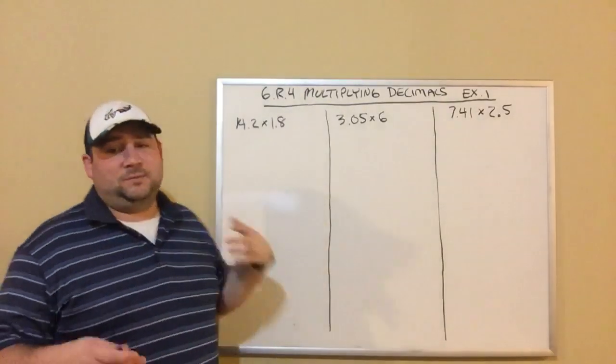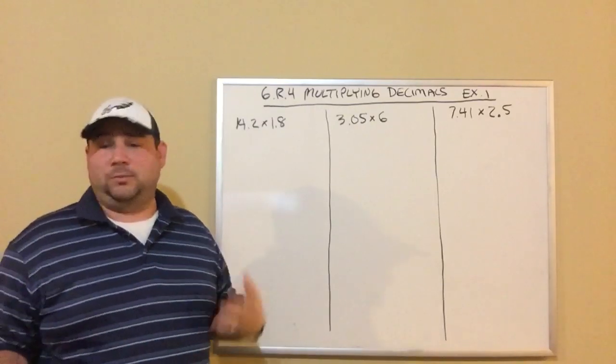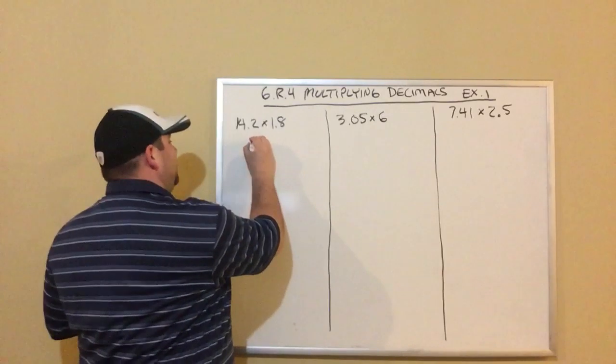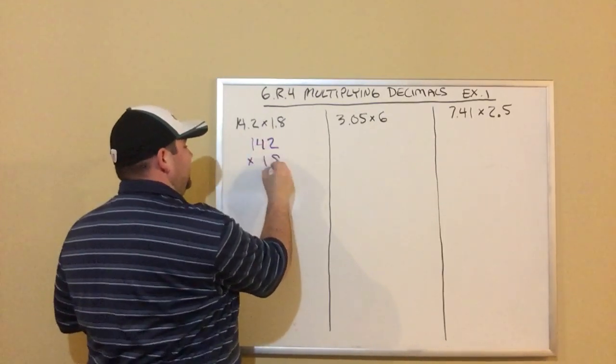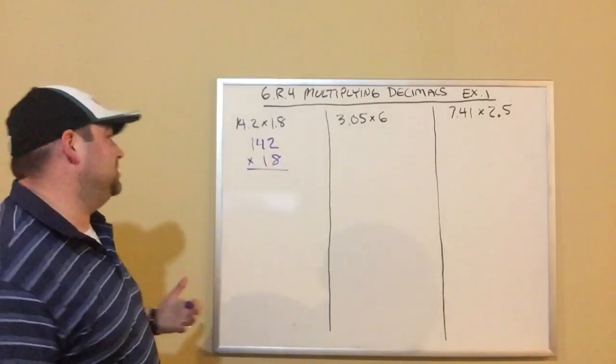When we multiply decimals, what we're going to do is multiply as if these were normal numbers, as if there were no decimal points at all. For example, I would imagine this is 142 times 18. I'm not even going to worry about the decimals right now. I'm just going to do that multiplication like we would normally multiply numbers.